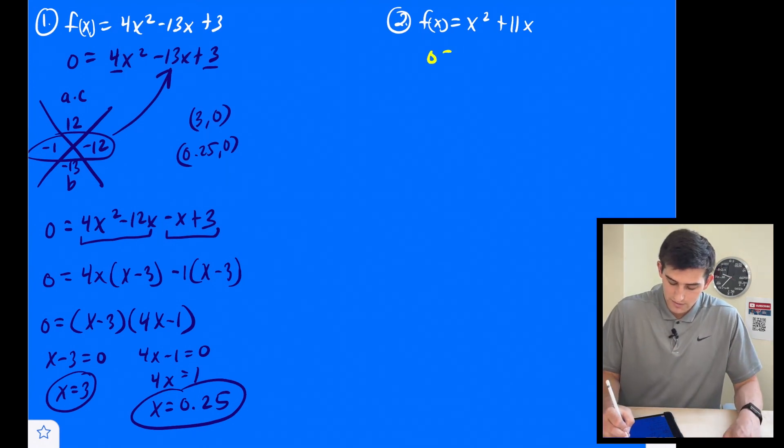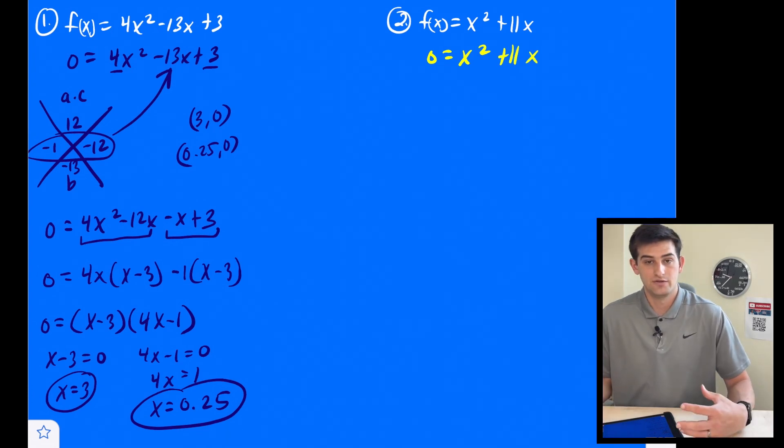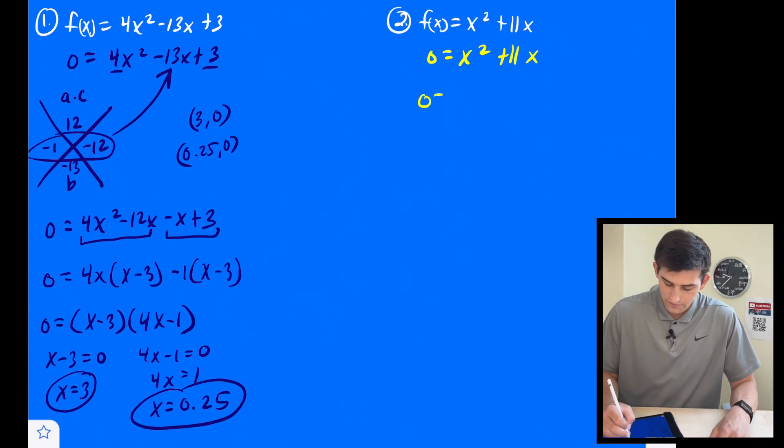For number two, we're going to do the same thing, set it equal to zero. And now we're going to factor on the right side. Well, here we can factor out just an x, and we get x(x + 11).